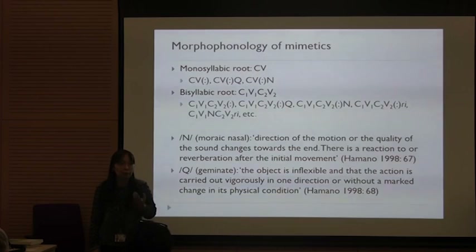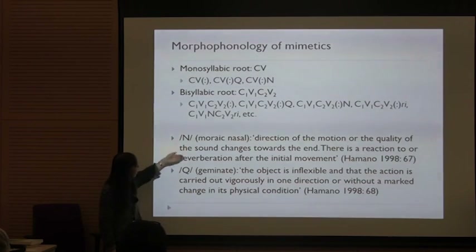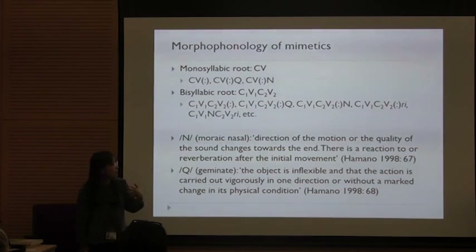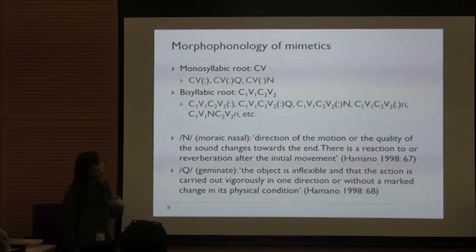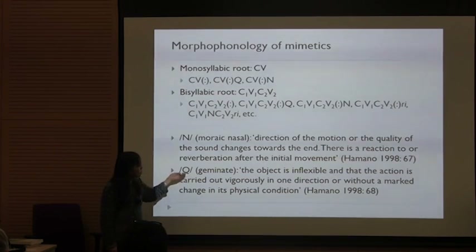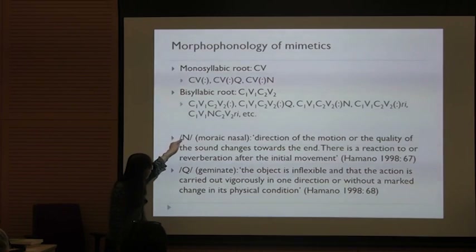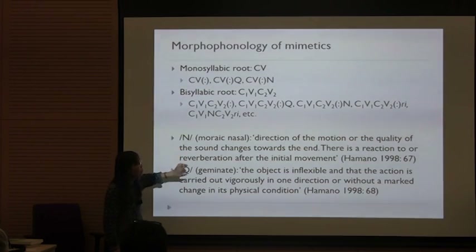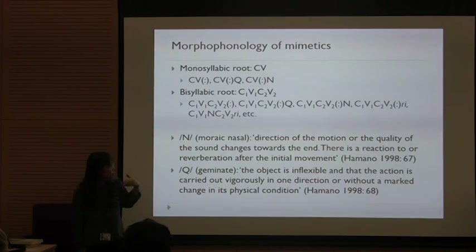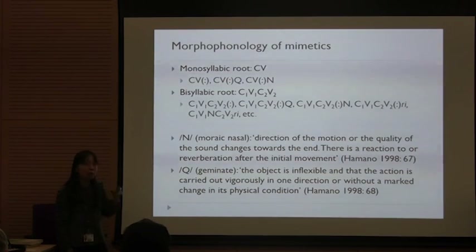This very typical part of Japanese mimetics — the moraic nasal — tends to suggest the direction of motion, quality of sound changes, or lingering effects. The geminate is also often used in notation for romanized Japanese mimetics. Moraic nasal and geminate: geminate suggests that the action is carried out vigorously, very quickly, and so forth. Let me give you some examples using Kakehi et al.'s dictionary — a very comprehensive dictionary of Japanese mimetics.